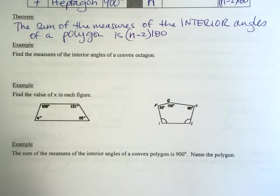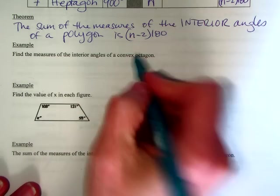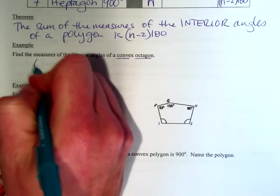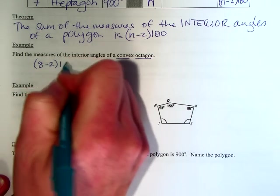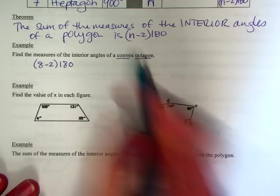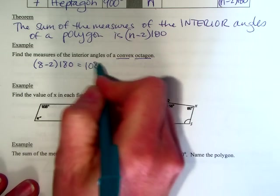So first example, it says find the measures of the interior angles of a convex octagon. So we know that octagon has eight sides, so I'm going to do eight minus two times 180. And if you just wanted to look up at our table, an octagon has 1,080 degrees in it.